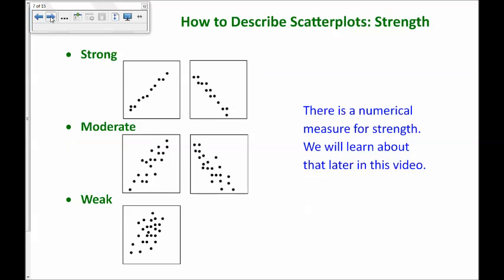Next, the strength. Is it a strong relationship or is it kind of a moderate strong or moderate weak or is it a weak scatter plot? There is a numerical measure for strength that we'll discuss later on in this video. But we talk about is it a strong or a moderate or a weak relationship.